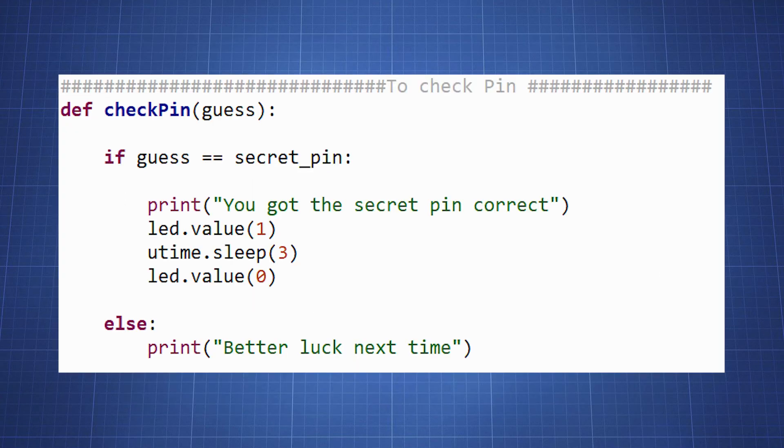In our check pin function we have an if statement to compare our guess list to a secret pin list. And if they are equal we print to the user you got the secret pin correct. And then we set our LED value to high for three seconds and then turn it low again. If the password did not match we display better luck next time. Before we upload this let's wire the LED quickly.